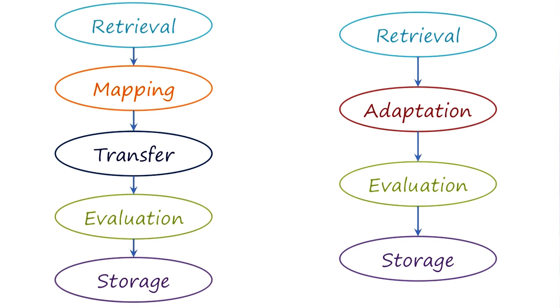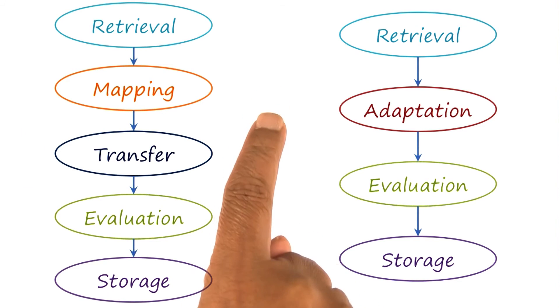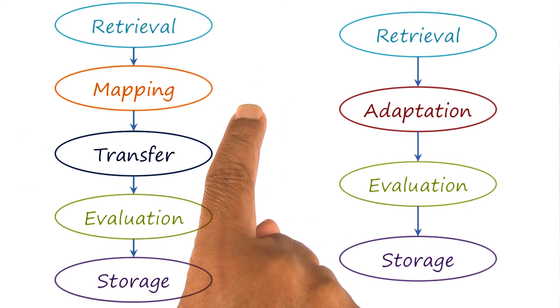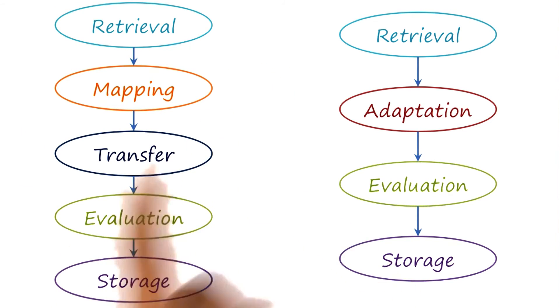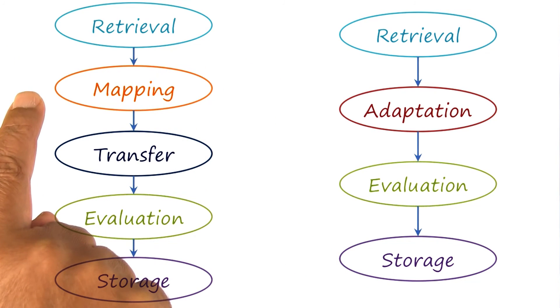As an example, in the Dunker radiation problem, we first did the alignment. That is, we addressed the correspondence problem. What in the target problem corresponds to what in the source case? Then, we took the relationship and abstracted it. The relationship in that case was: take the resource and decompose it into several smaller resources and send them to the goal at the same location. That particular relationship, that particular pattern, is what we abstracted and transferred to the target problem.